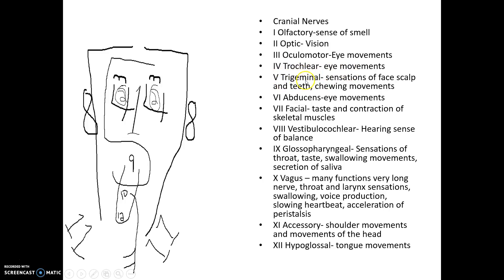Number 5, the trigeminal. Notice here's my number 5 right here. We have sensations of the face, scalp, and teeth chewing movements. We kind of made a mouth out of that portion of the 5. Number 6, abducens, eye movements. There's another one in the eye area. It's kind of made a circle around the 2, but that's a 6. Look at the cranial nerves dealing with the eyes: 2, 3, 4, and 6. 1 dealt with smell. 5 deals with face, scalp, mouth, and chewing movements.